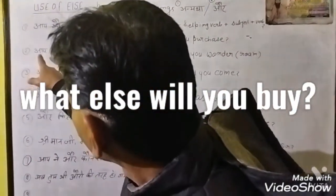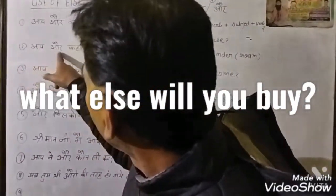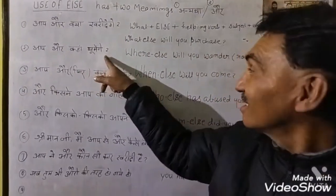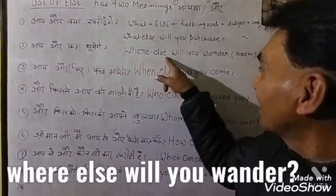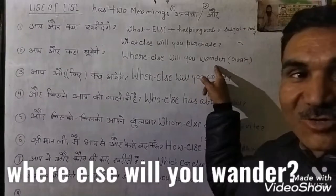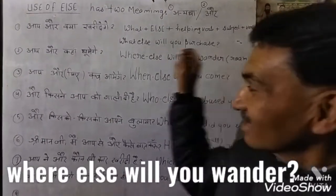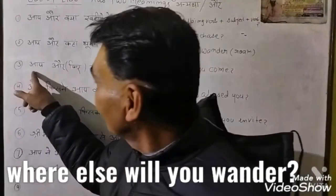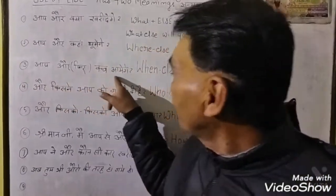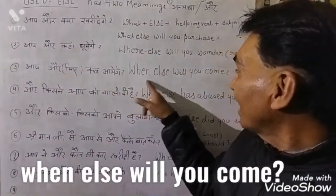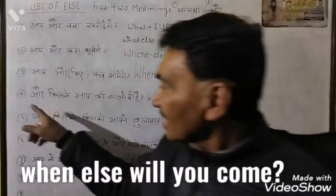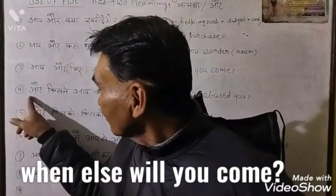The second example: आप और कहाँ घूमेंगे? So: 'Where else will you wander?' Right. Now the third one: आप और फिर कब आएंगे? — 'When else will you come?' Now next one.